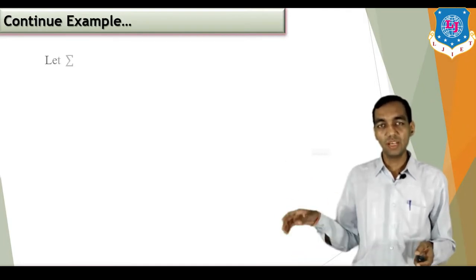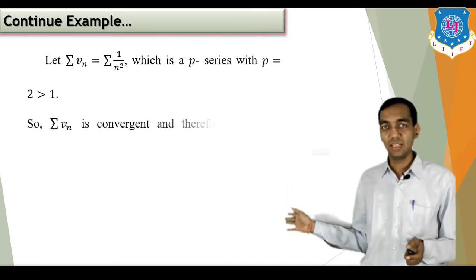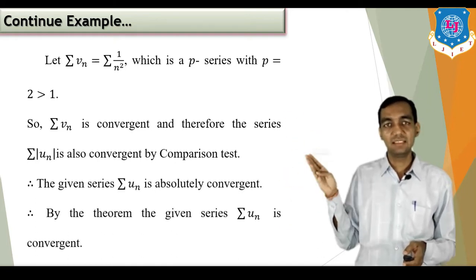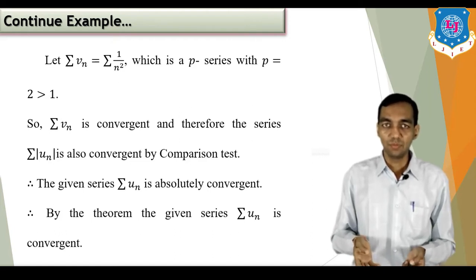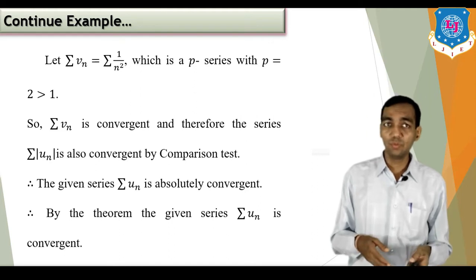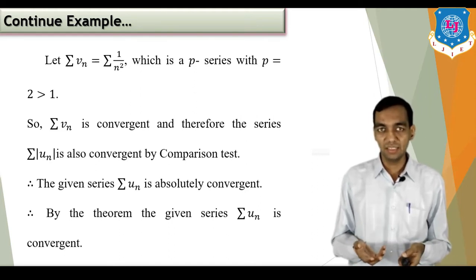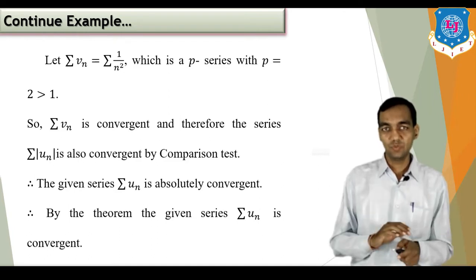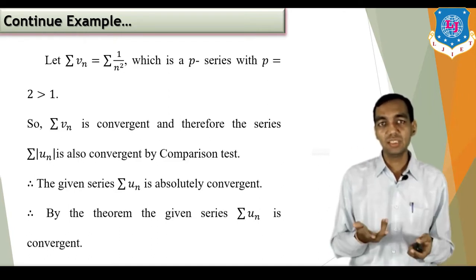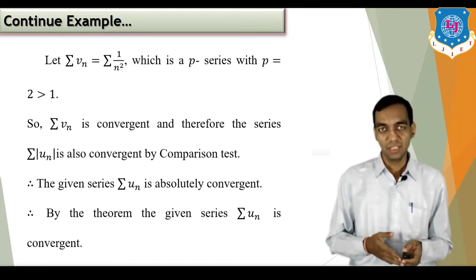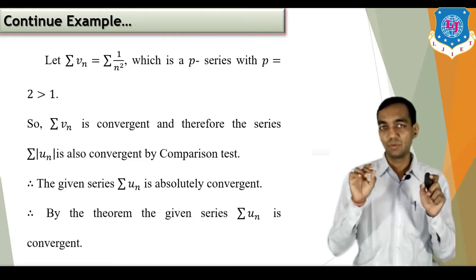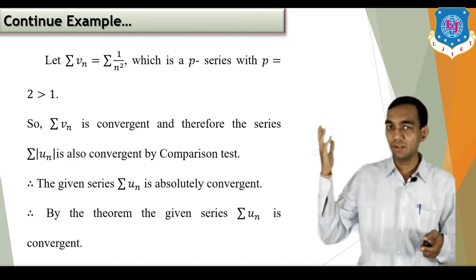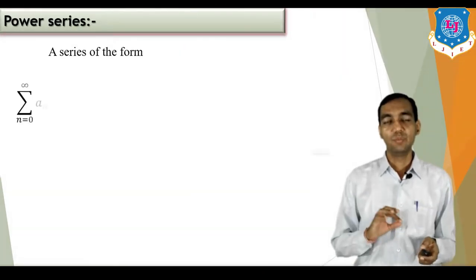Applying the comparison test: sigma v_n = sigma 1/n² is a p-series with p = 2, and since p = 2 > 1 the series is convergent. So sigma v_n is convergent, therefore sigma |u_n| is also convergent by comparison test. By our condition for absolute convergence, if the mode series is convergent then the given series sigma u_n is absolutely convergent. And since the mode series is convergent, the given series is also convergent by theorem.